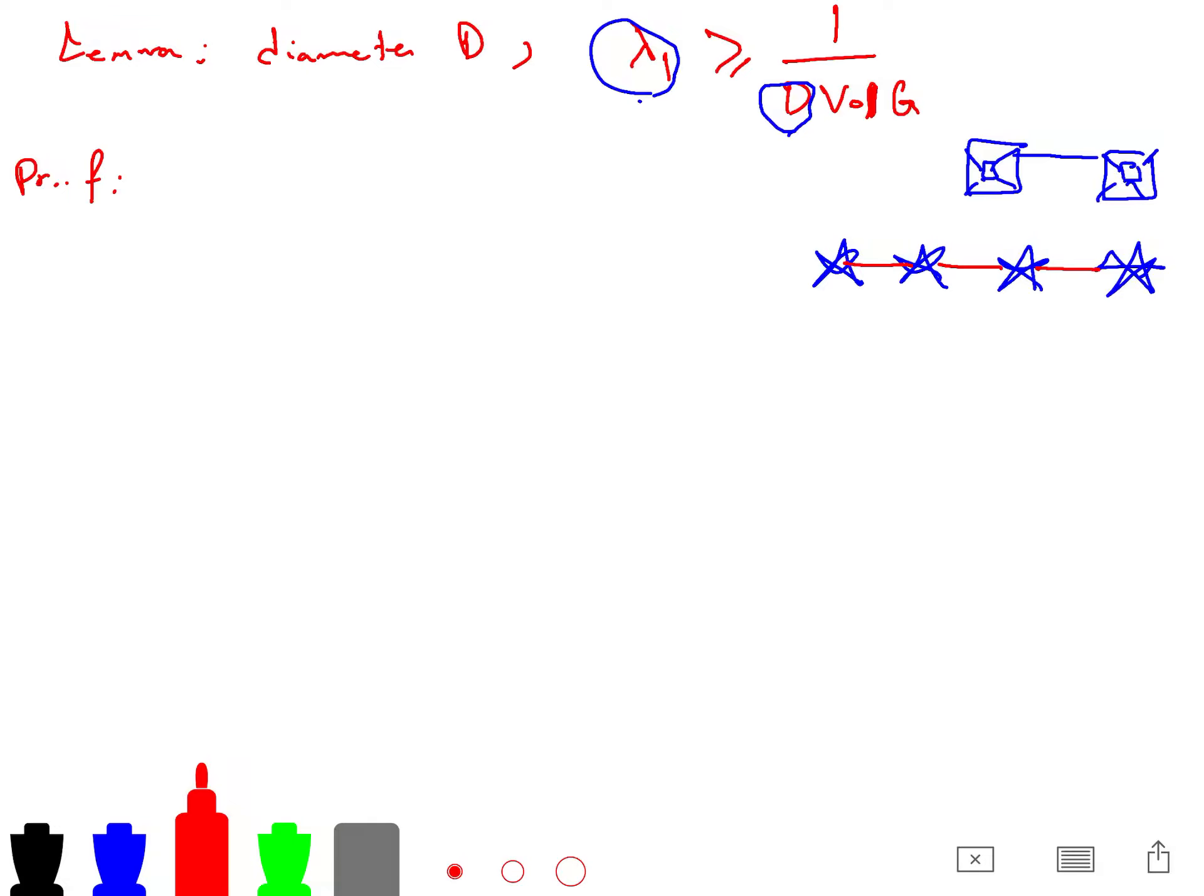And you will see that when d goes up, it means that lambda 1 goes down, so it is more disconnected. So the more lambda 1 is close to zero eigenvalue, it means it is more disconnected.